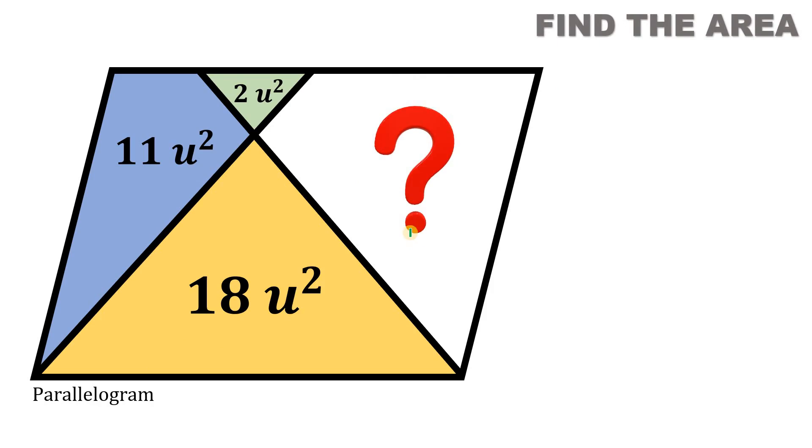So given this figure, the goal is to find the area of this white region. Given that the area of this small triangle is 2 square units, this is 18 square units, and this is 11 square units. Now the technique to answer this kind of question is if we get the area of this parallelogram, then we need to subtract 11 and 18 and we're done. So the goal is to find the area of this parallelogram. And to do that, we will use this concept.